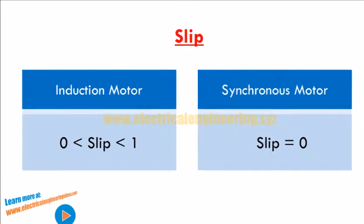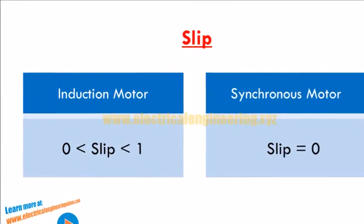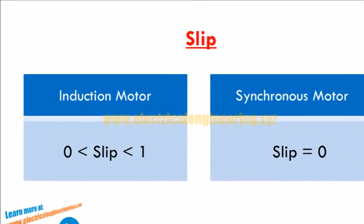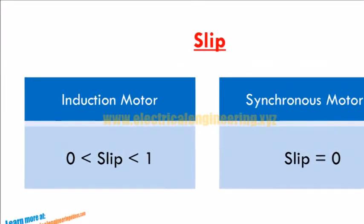Slip of motor is the ratio that explains the difference between the synchronous speed and shaft speed. The slip of induction motor is always between 0 and 1, whereas the slip of synchronous motor is always 0.